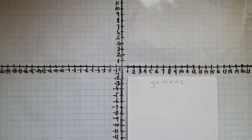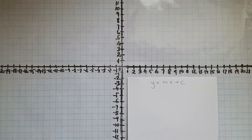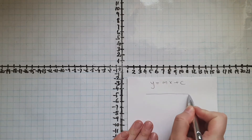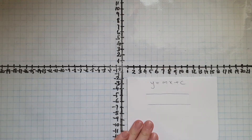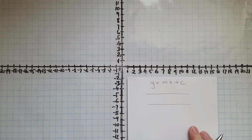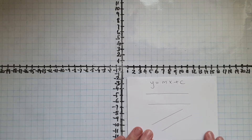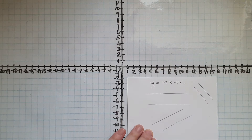In this video we'll learn to use the form y equals mx plus c to identify parallel lines. First of all, what are parallel lines? Parallel lines are lines which are at equal distance from each other, so they never meet. These two would be parallel lines — the direction doesn't really matter.